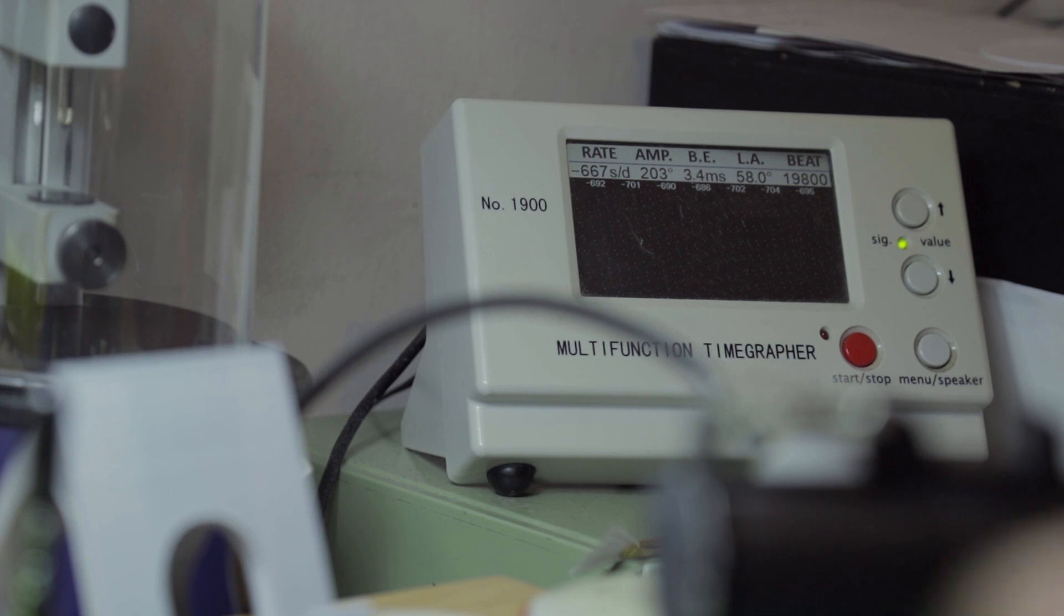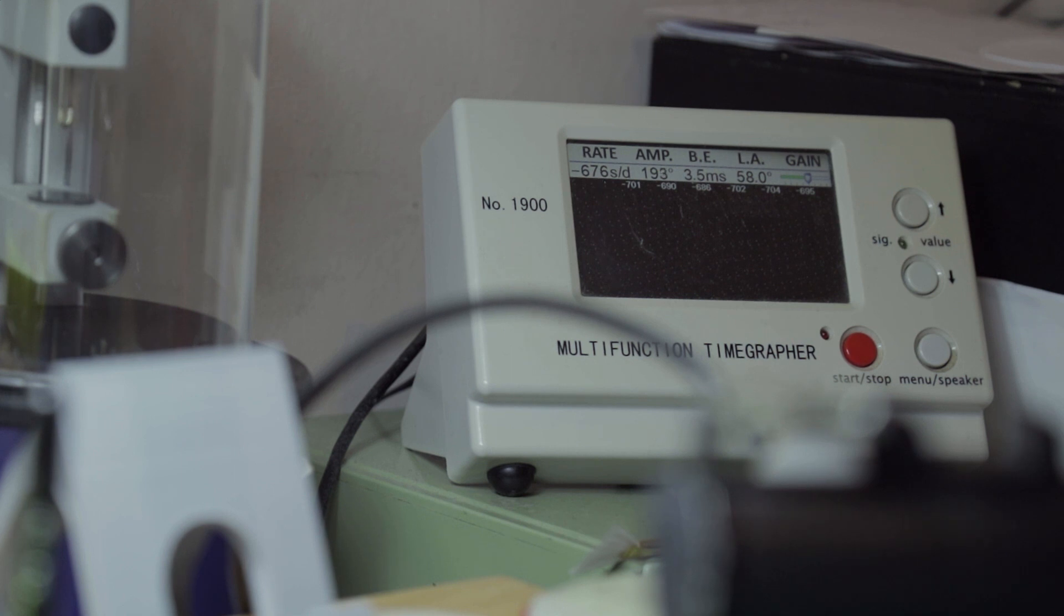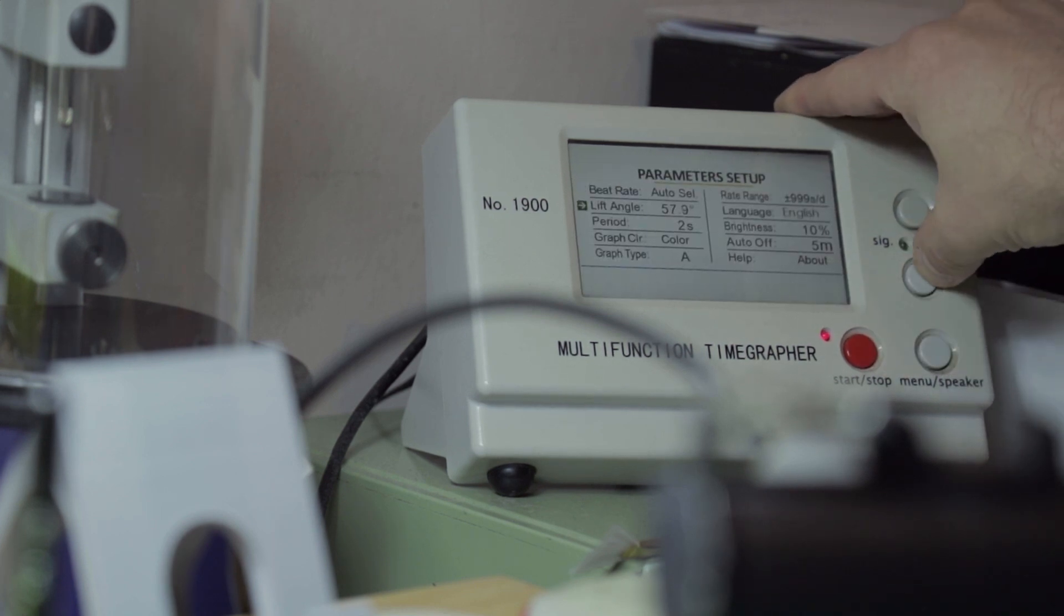So you can see the time grapher is reading currently around 200, 196 to 210 degrees, varying ever so slightly. The balance is actually swinging at about 140, 145 degrees. What I'm going to do now is change the lift angle to 48.